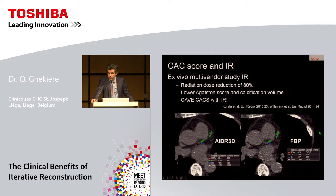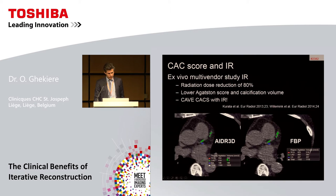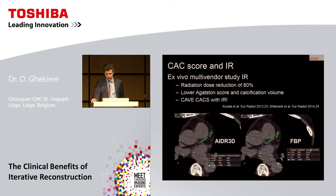In the next VIVO study — a multi-vendor study evaluating iterative reconstruction — a radiation dose reduction of 80% was reported compared to filter back projection, and also a lower Agatston score and lower calcium volume were reported. You can see the clinical example reconstructed with AIDR 3D and filter back projection in the same patient, showing the difference in total Agatston score. Caution should be taken when evaluating the Agatston score with iterative reconstruction, although less than 3% cardiac risk reclassification has been reported in a population of more than 100 patients.